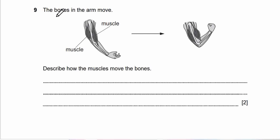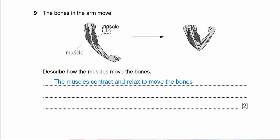Question 9: The bones in the arm move - upper arm and lower arm. Describe how the muscles move the bones. Put on your thinking caps and write down your answers. Pause if you need time to think. The answer: The muscles - there are two muscles up and down, this is biceps and this is triceps. They contract and relax to move the bones. When you bend our elbow, this one contracts. When we lower our elbow, this one contracts.